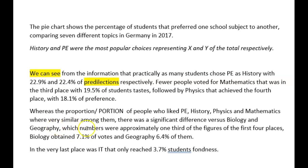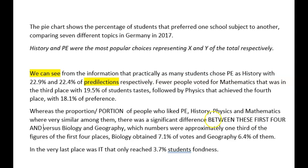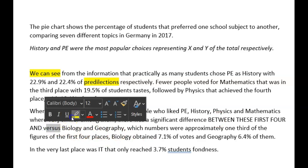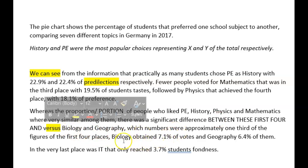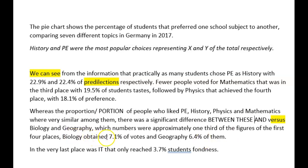Whose numbers belonging to them were approximately a third of the figures of the first four places — really good difference. Now, what you've written here is there's a difference between biology and geography, which actually there isn't. What you mean is there is a difference between those and these. So I would suggest: 'Between these first four and biology and geography, whose numbers were approximately a third of the figures of the first four.' Biology with 7.1 and geography. In the very last place was IT, that only 3.7% of students voted for, or students preferred.